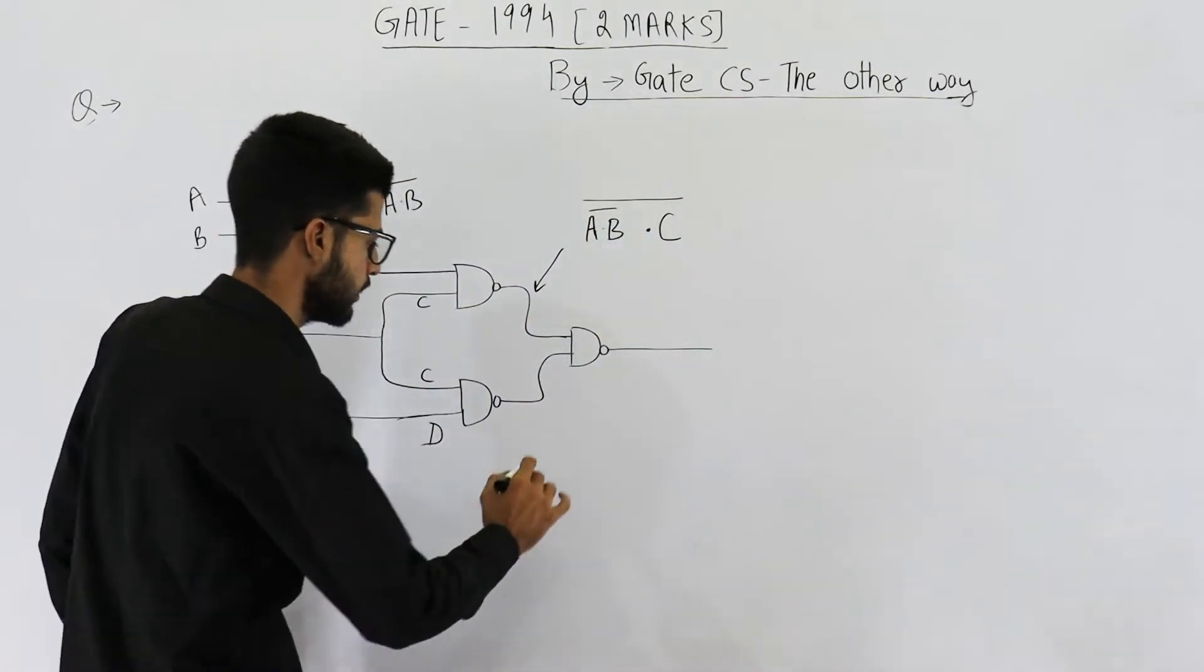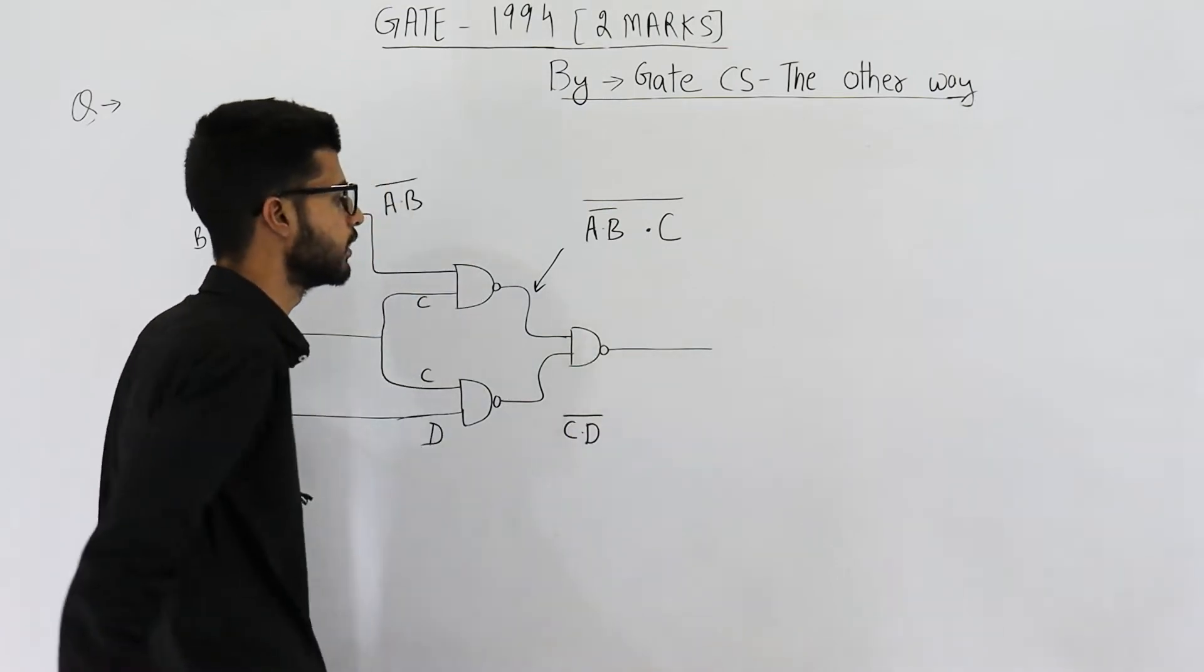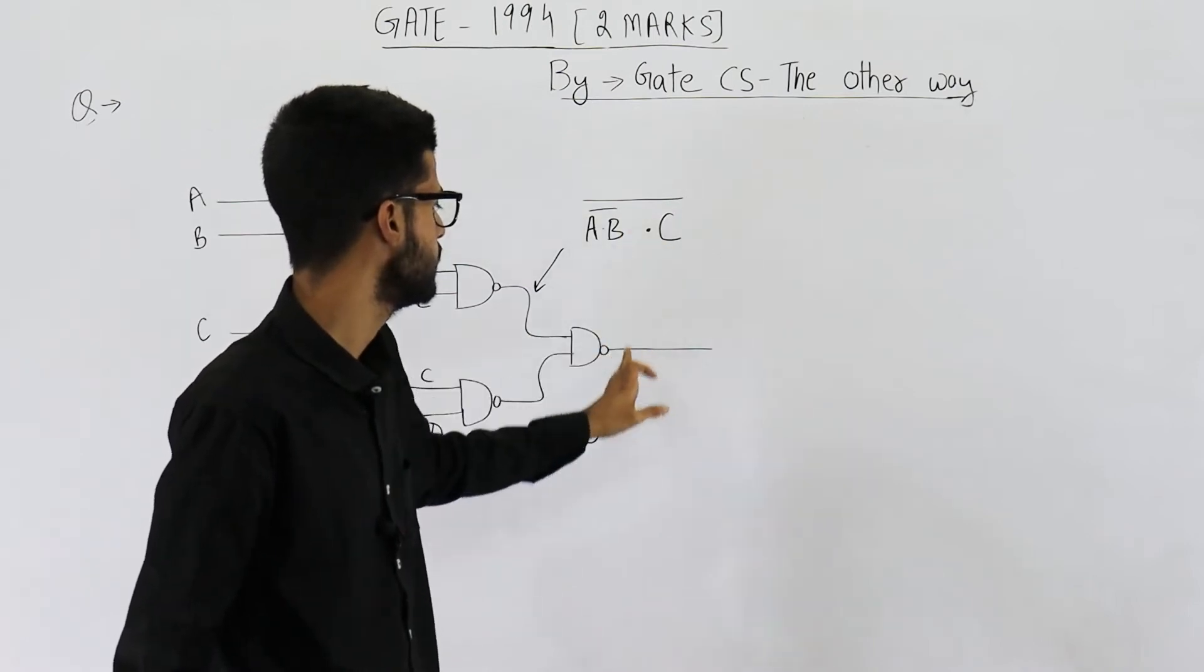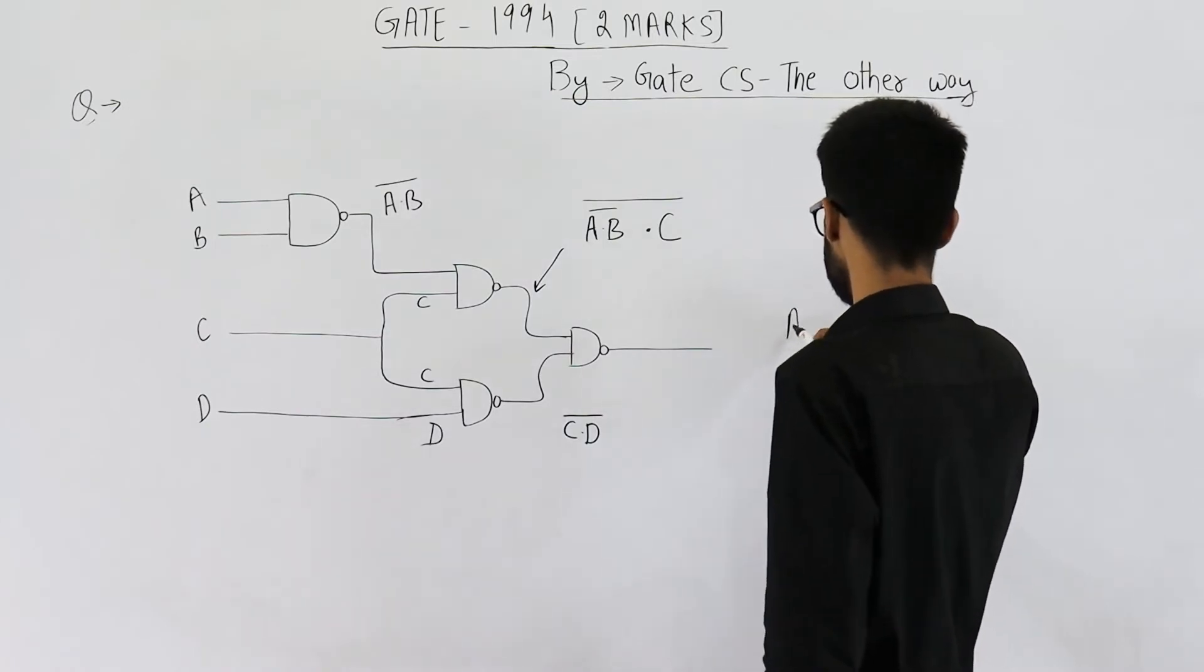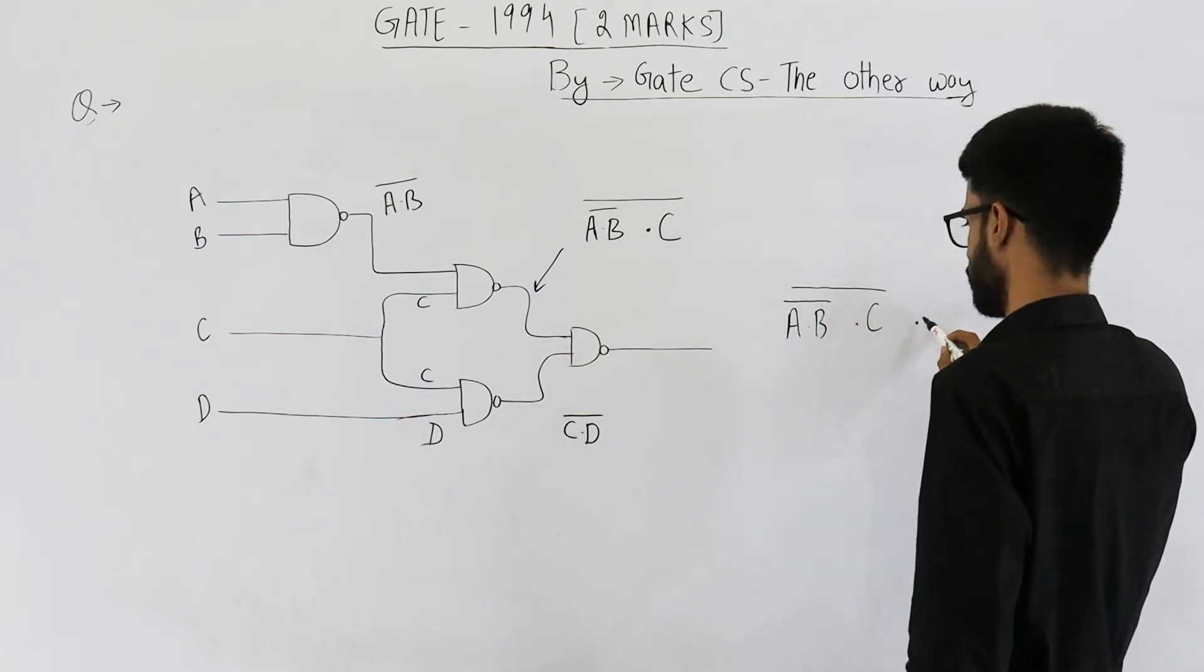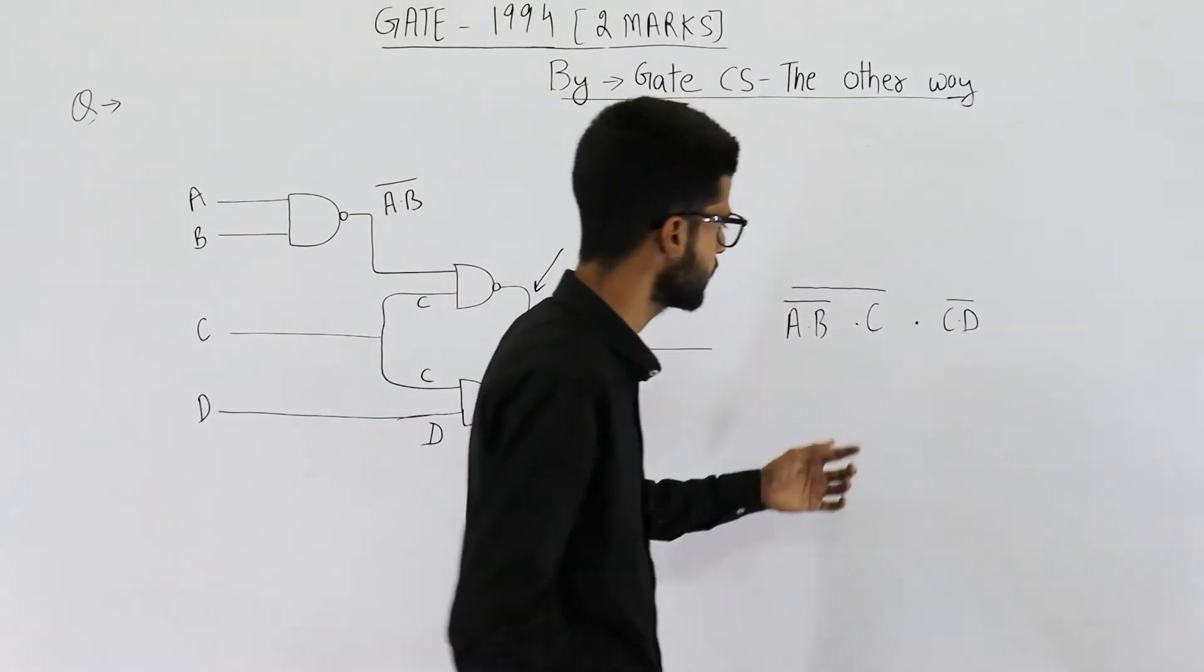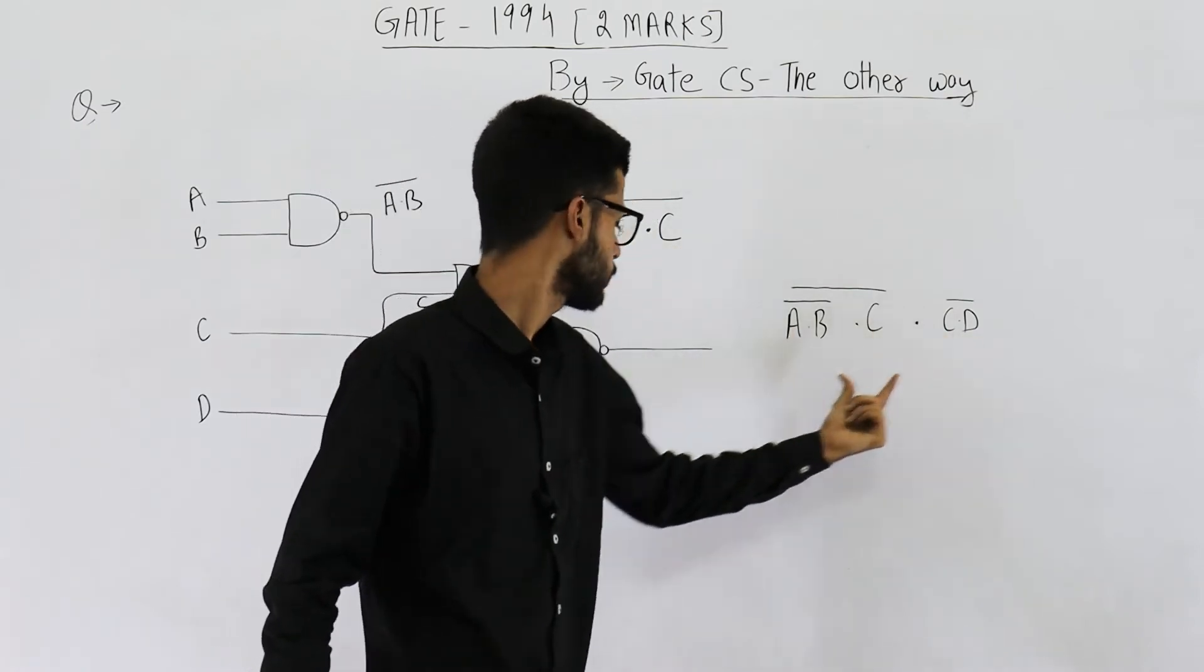Let's find out what is here. This will be c NAND d. Okay, now you just find out NAND of these two. Let's do that. So the output here will be a dot b complement dot c complement dot c complement d complement. Okay, so this much is AND. Look, this is coming from here and this one is the second input.